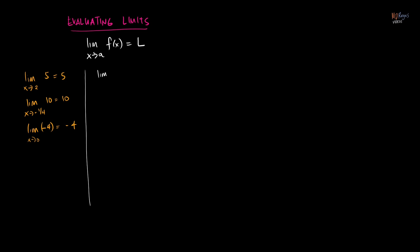Say you want to evaluate the limit of 2x minus 1 as x approaches 1. You simply substitute the value of 'a', which is 1, for x in the function. So that would be 2 times 1 minus 1, giving us 2 minus 1, which equals 1. So the limit of 2x minus 1 as x approaches 1 is equal to 1.